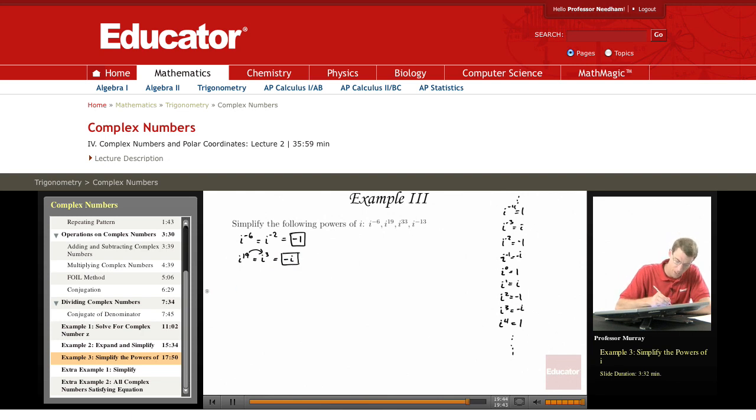i to the 33, again if you're counting by multiples of 4, you have 4, 8, 12, 16, 20, 24, 28, 32, and then 33 is 1 more, so that's i to the 1, because remember it cycles every 4 powers of i, so this i to the 1 is just i.